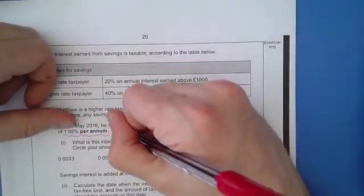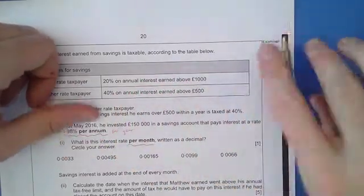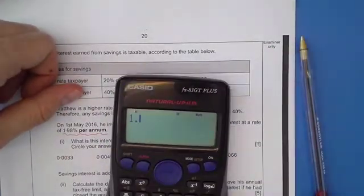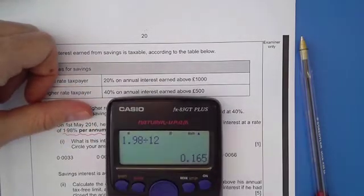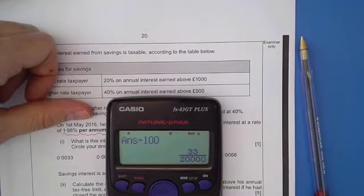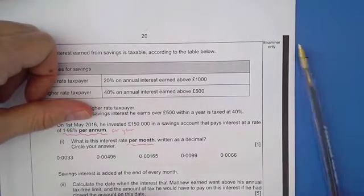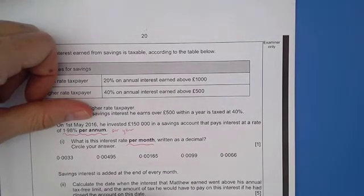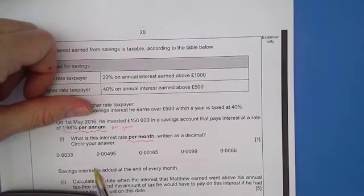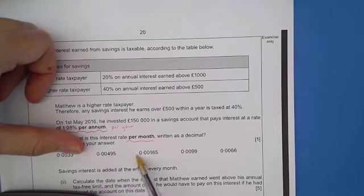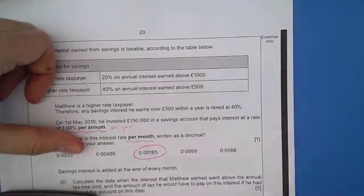What is this interest rate per month? Per annum means per year, and then we want to change that into per month. So what we need to do is do 1.98 divided by 12. That gives us what the monthly interest rate is, but that still is a percentage, so I need to divide that by 100, which gives me standard form. So minus 3 there. That means that we're looking to have three zeros in front of it. Three zeros, but not 165. There it is.